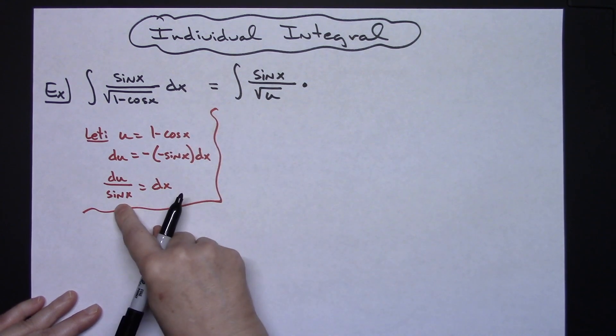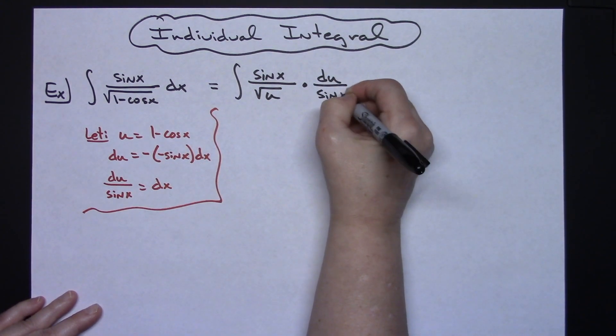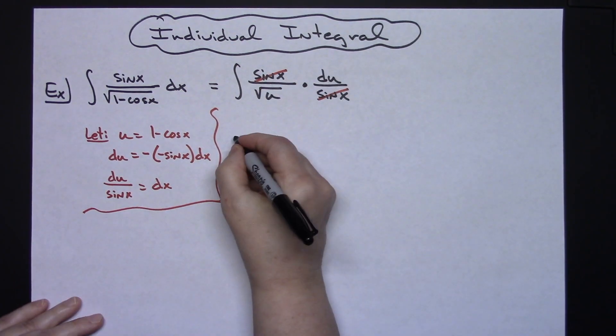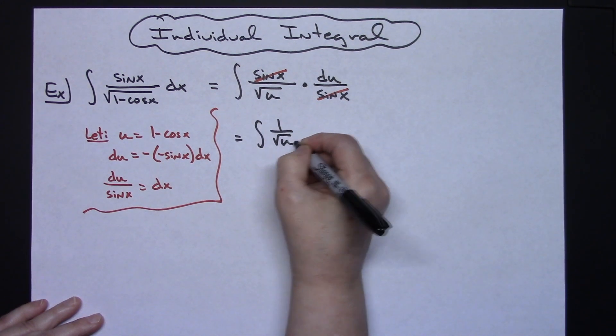When I have replaced dx I will have a du over sine x. That's going to allow those sine x's to cross out which is going to leave me with the integral of 1 over square root of u du.